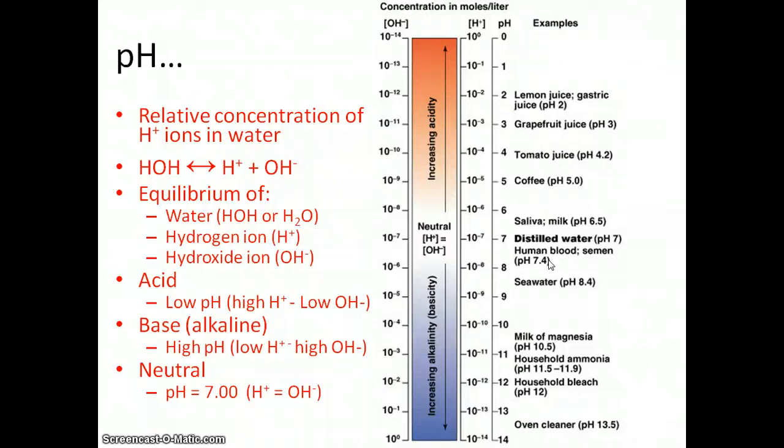It's so important that there are three different mechanisms that the body has to maintain proper pH. One is buffers, two is the respiratory system, and three is the renal or the kidneys.